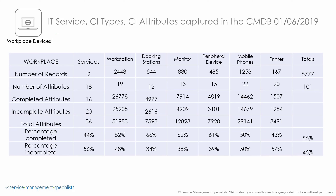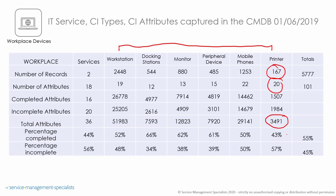And finally, workplace devices — all of our service components from workstation all the way through to printers. In this case, we know that we've got 167 printers and the attributes per printer is 20, giving us a total of 3,491. We're currently at 43% of completing those, so we've got some work to do in actually capturing those. The total workplace devices domain is currently at 55% complete, so some work to do over the coming months.